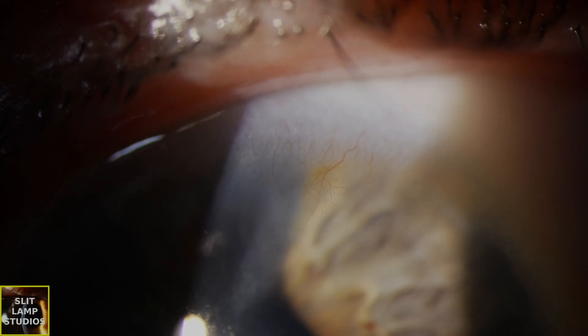So if you have vascularization, inflammation, as we can see here, we know it's active because we can see those individual red blood cells moving through the blood vessels.